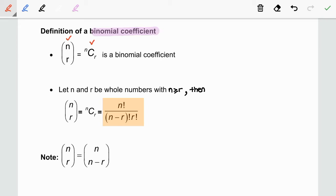So how do we compute binomial coefficient? There is a formula. When n and r be whole numbers with n is greater or equal to r, then n choose r is equal to n factorial divided by n minus r factorial times r factorial.